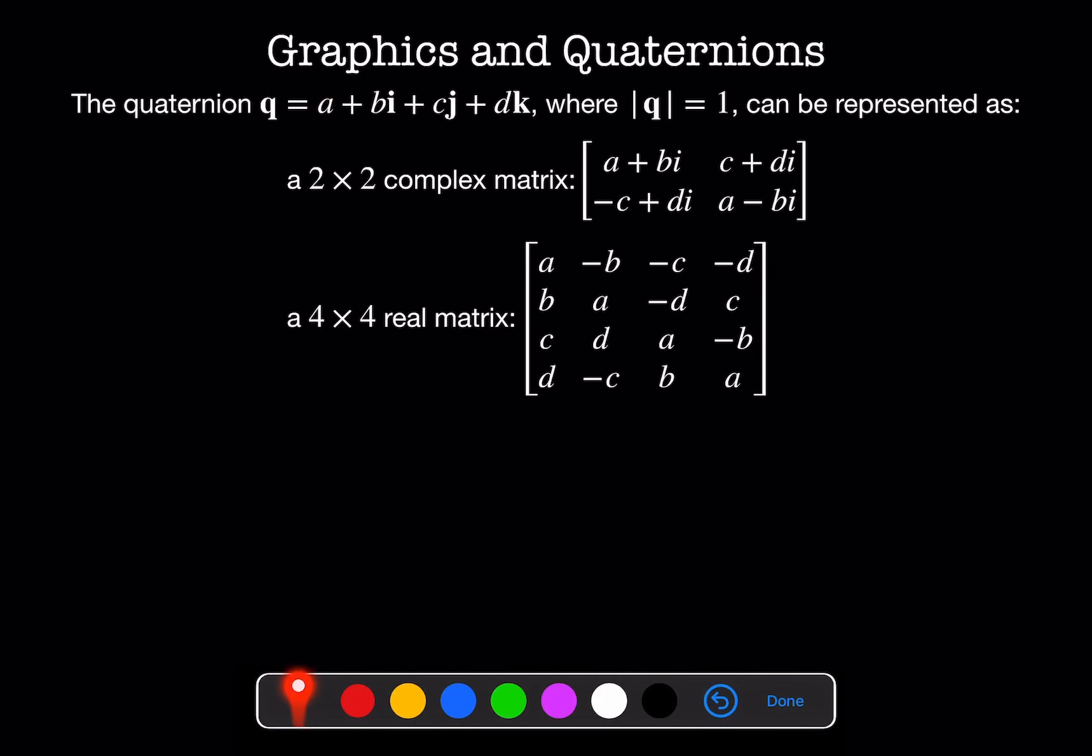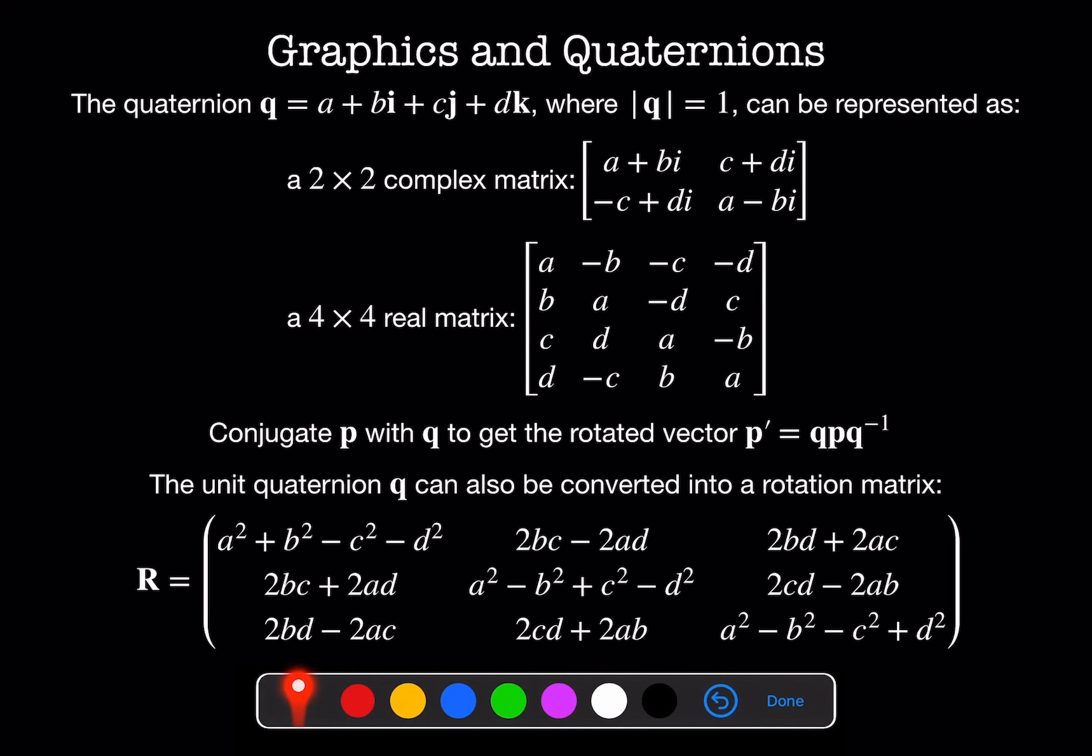In our normal three-dimensional space, we can write any vector p as a quaternion where the real part, so this a term, is equal to 0. Then a rotation of this point is given by conjugating a quaternion p with the quaternion q. Likewise, we can express quaternions as orthogonal rotational matrices, so this is just a normal 3x3 rotation matrix, the same as we're always used to.